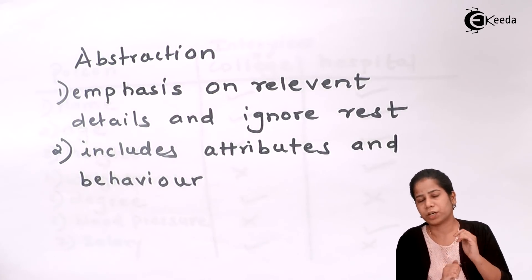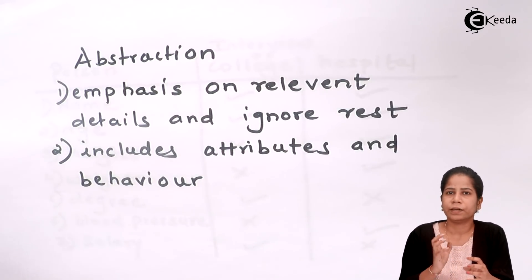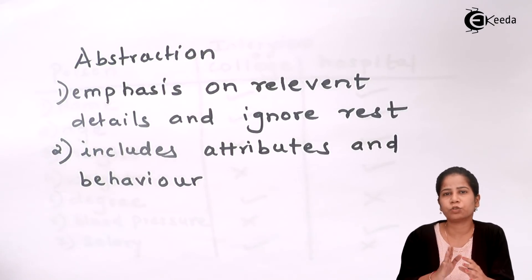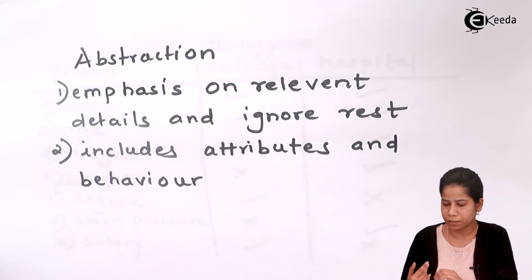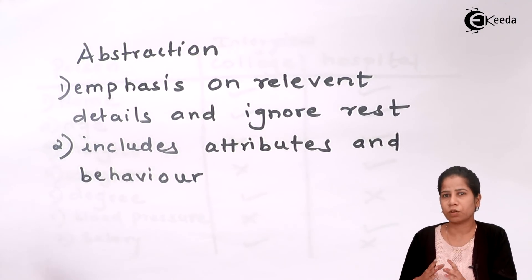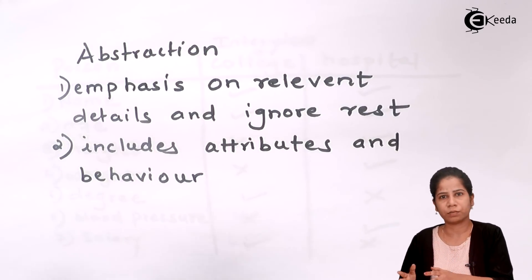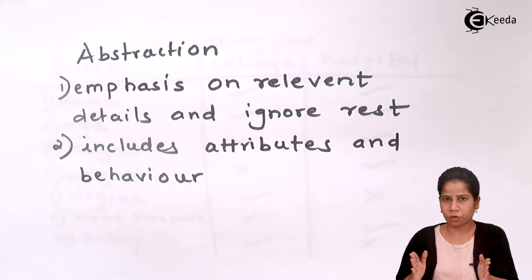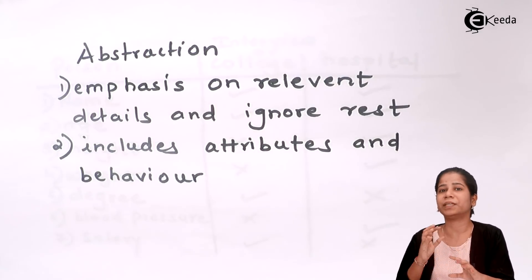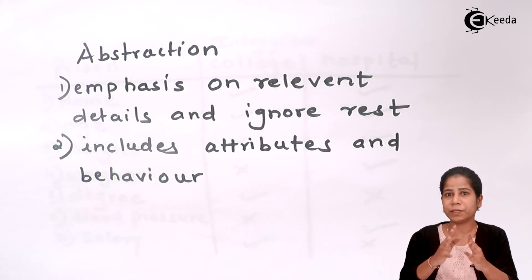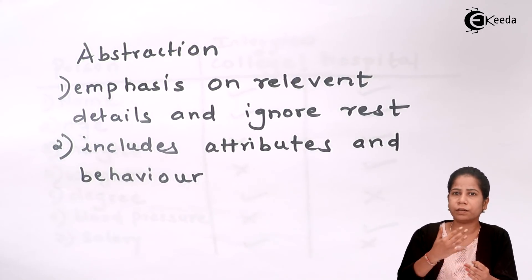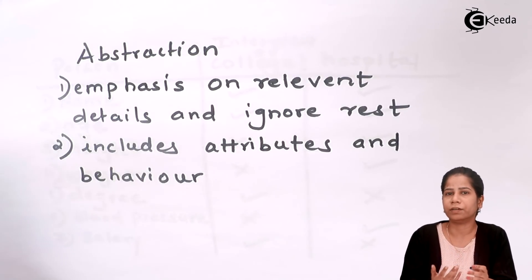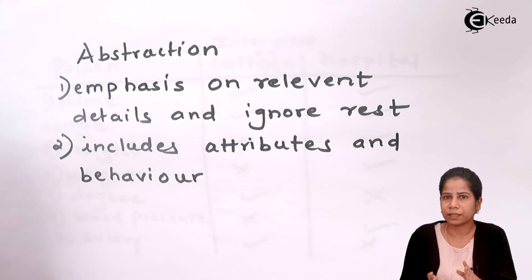So that is known as a situation, and in that situation, only a few features or behaviors are relevant at that point. That is nothing but abstraction. Abstraction means: only concentrate on the relevant thing and the rest should be ignored. Abstraction is nothing but emphasizing on relevant details and ignoring the rest. It is possible in terms of attributes as well as in terms of behavior. At a given environment, we emphasize on certain attributes as well as certain behaviors. In a college, the required behaviors for a person are reading capability and learning capability. All other abilities that person has are irrelevant in that particular situation.